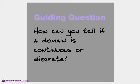Our guiding question today is, how can you tell if a domain is continuous or discrete? There are two main types of domains, continuous and discrete, and we're going to be able to answer this question by the end of the lesson today.